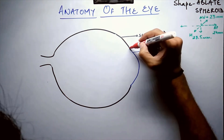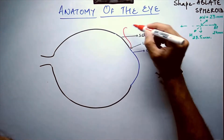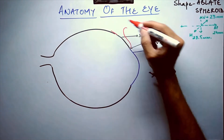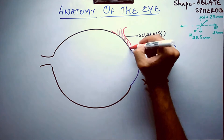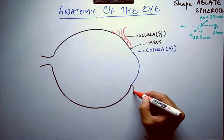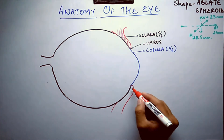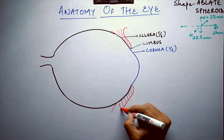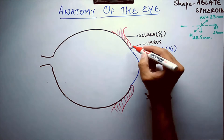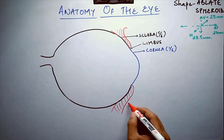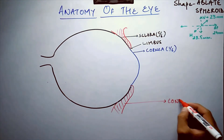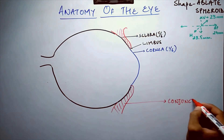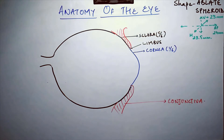Attached to the limbus is the conjunctiva. There are basically two types: the bulbar conjunctiva, which is attached to the eyeball, and the palpebral conjunctiva.